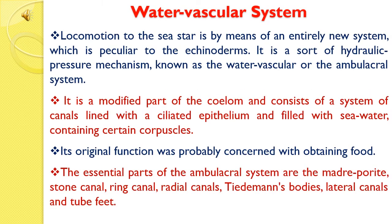Water Vascular System of Starfish. Locomotion in the starfish is by means of an entirely new system which is peculiar to the Echinodermata. It is a sort of hydraulic pressure mechanism known as the Water Vascular System or the Ambulacral System. It is a modified part of the coelom and consists of a system of canals lined with ciliated epithelium and filled with sea water containing certain corpuscles. Its original function was probably concerned with obtaining food.